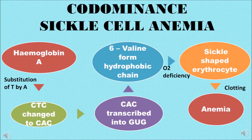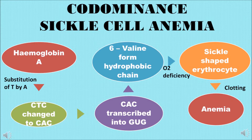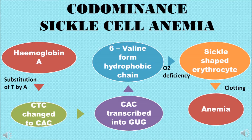Sickle cell anemia is a good example of co-dominance. It is an autosomal hereditary disorder. Chromosome 11 carries the beta-globin gene for normal hemoglobin A. Due to a mutation — a substitution of thymine by adenine in the beta-globin gene — the CTC triplet codon changes to CAC, which is then transcribed into GUG during mRNA formation. This GUG codon codes for valine instead of glutamic acid, and valine begins forming a hydrophobic chain.